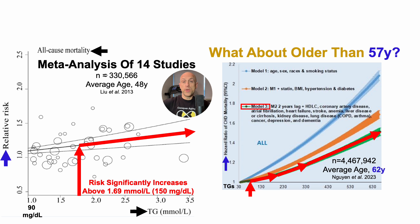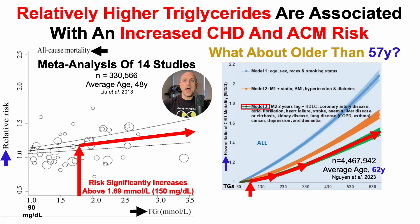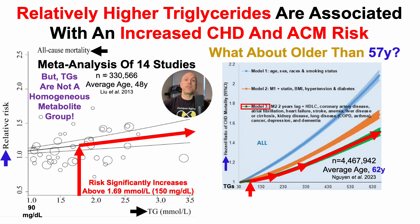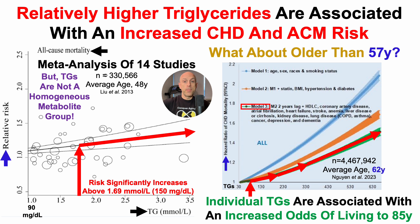From these three studies, we can see that relatively higher triglycerides are associated with an increased coronary heart disease and all-cause mortality risk. But note that triglycerides are not a homogeneous metabolite group. When we think about triglycerides, we think of them as one large group all going in the wrong direction if they're increasing — but individual triglycerides are associated with an increased odds of living to 85 years.